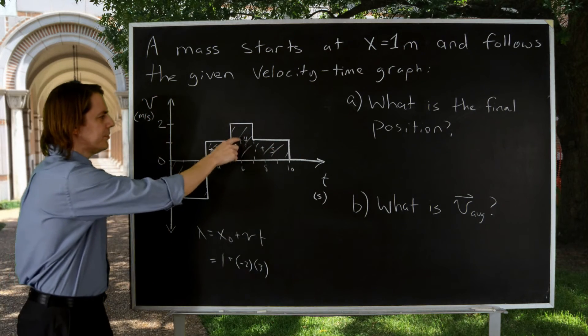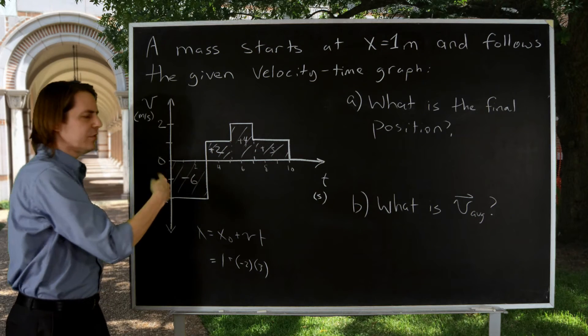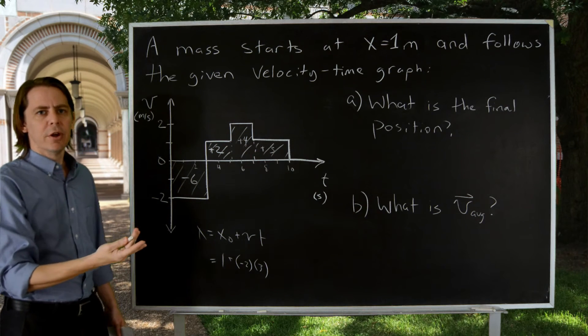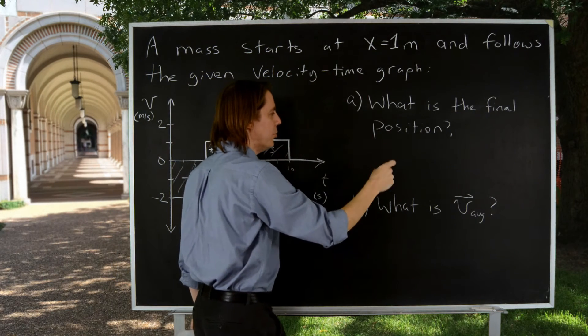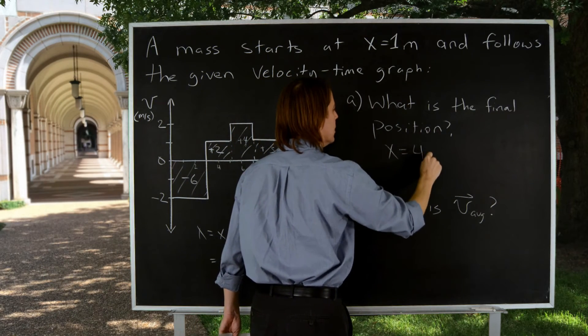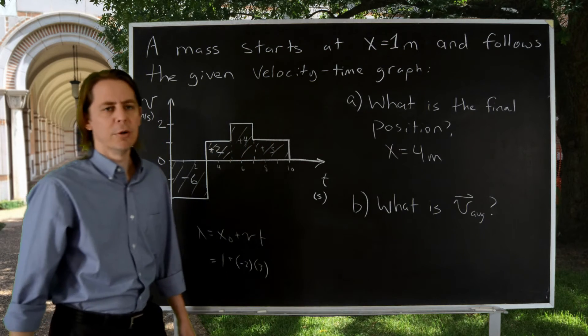So really, if you add those areas, four plus six, seven, eight, nine minus six is three. It went three. And you're done. That's all you got to do. If it started at one and went three more, its position is four meters. Rodney was right.